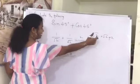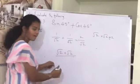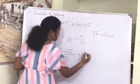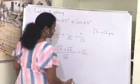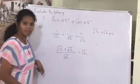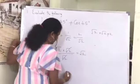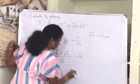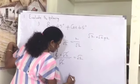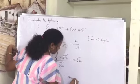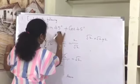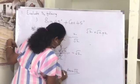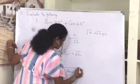We can express 2 as root 2 into root 2 divided by root 2, which simplifies to root 2. Therefore, the answer for the given equation, sin 45 plus cos 45, equals root 2.